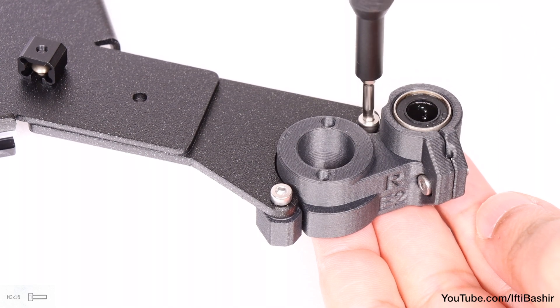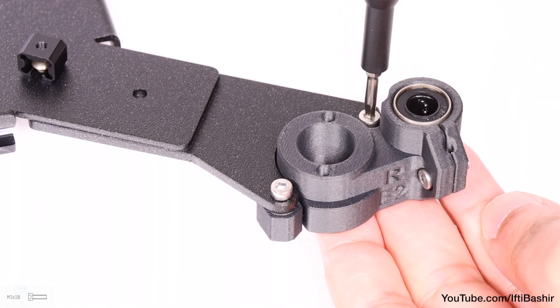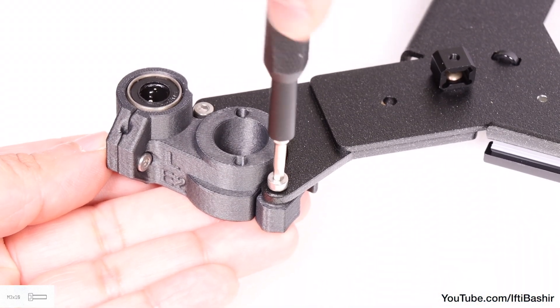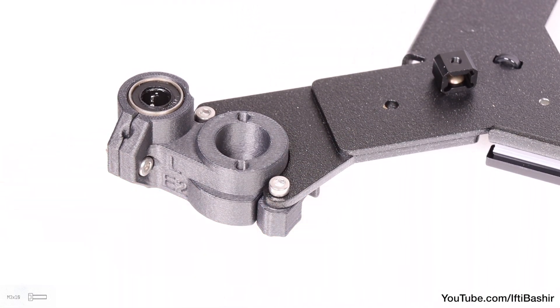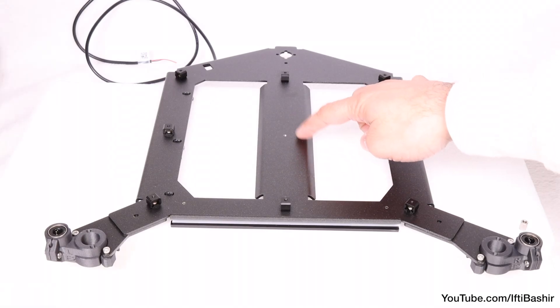These will secure directly to the nylon lock nuts that we inserted just underneath. Tighten until snug. Repeat the same process with the left side, again taking care with orientation, and again using two M3 by 10 screws to secure into position.